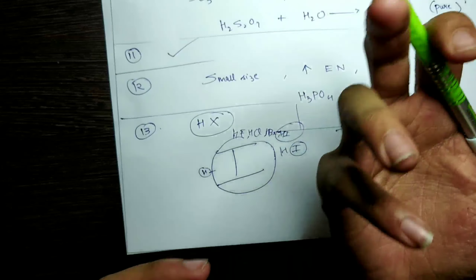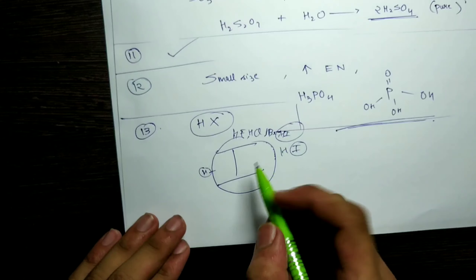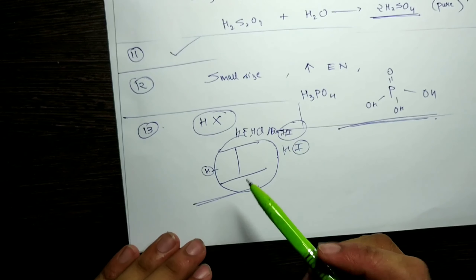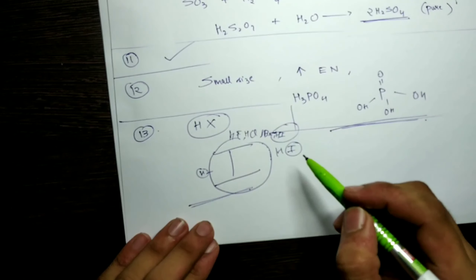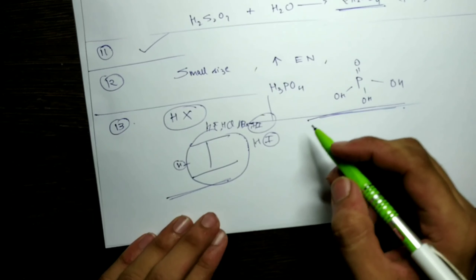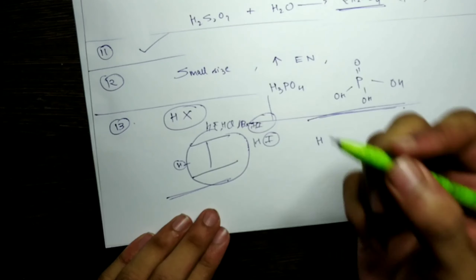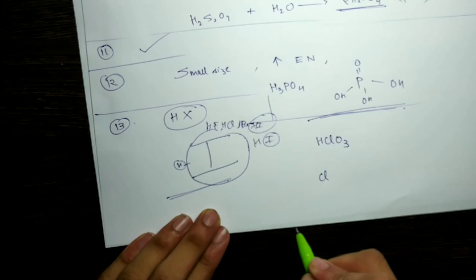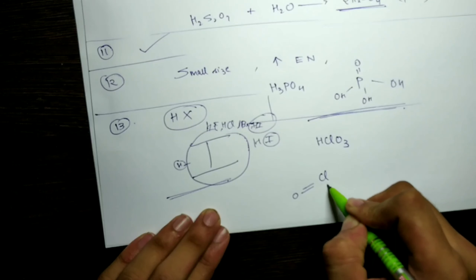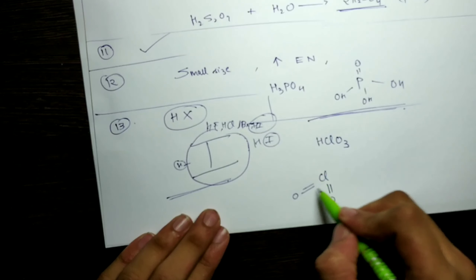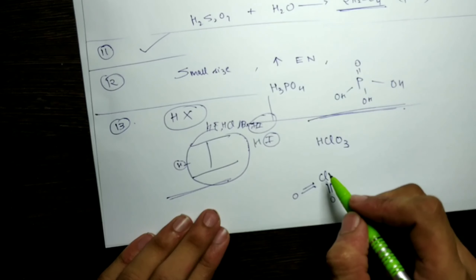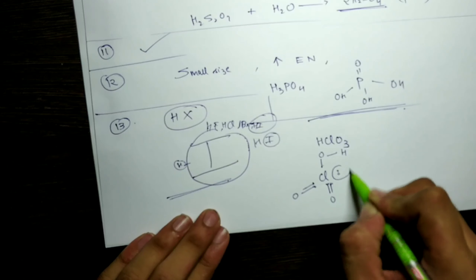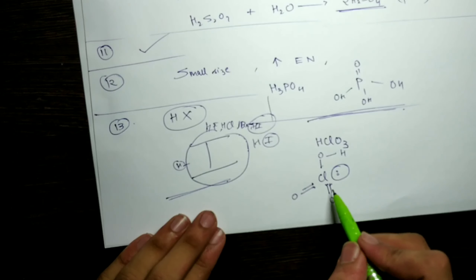Question 12, Part 1: Mention any two anomalous properties of nitrogen. The reasons are the same as for any first element — small size, high electronegativity, high ionization enthalpy, and non-availability of d-orbitals. Part 2: Write the structure of orthophosphoric acid (H₃PO₄). The structure has phosphorus with a P=O double bond and three OH groups attached, giving it a basicity of three.